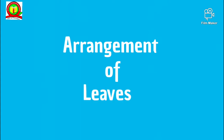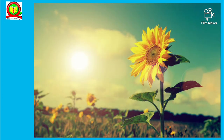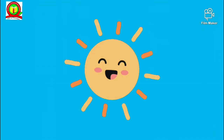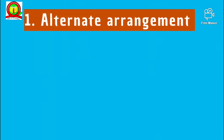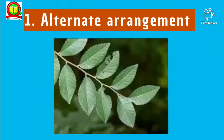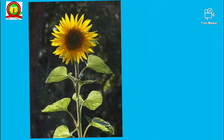Now we have come to our last segment — the arrangement of leaves. The leaves are arranged in various ways on the stem. The arrangement of leaves on the stem is called phyllotaxy. The main aim of phyllotaxy is to expose all the leaves of the plant to maximum sunlight and air. The first type is alternate arrangement: a single leaf arises at each node and the next leaf arises on the opposite side of the previous leaf, for example in the sunflower.